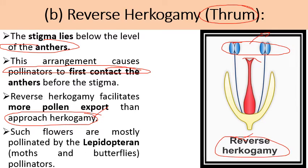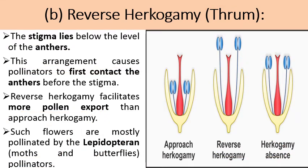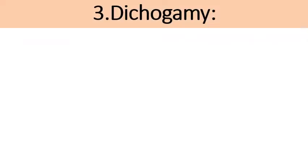Such flowers are mostly pollinated by Lepidoptera, which include moths and butterflies. In addition, there is a third type of flower where herkogamy is absent — meaning the anthers and stigmatic surface lie on the same level.